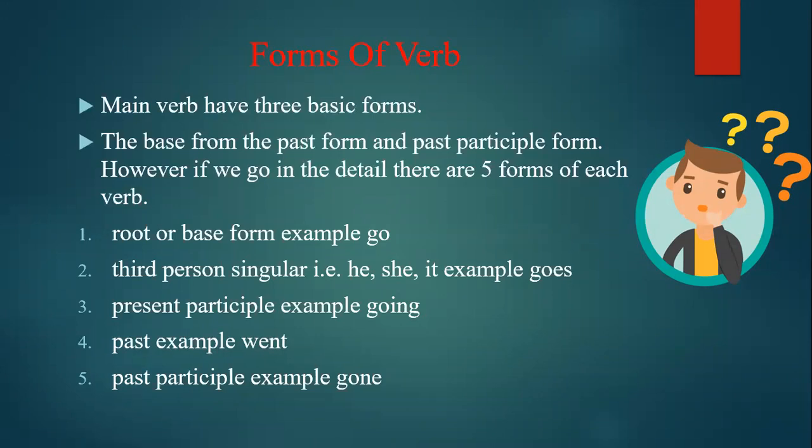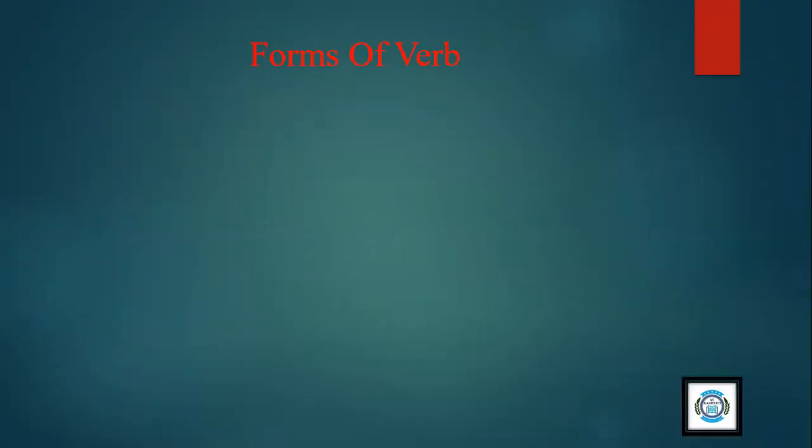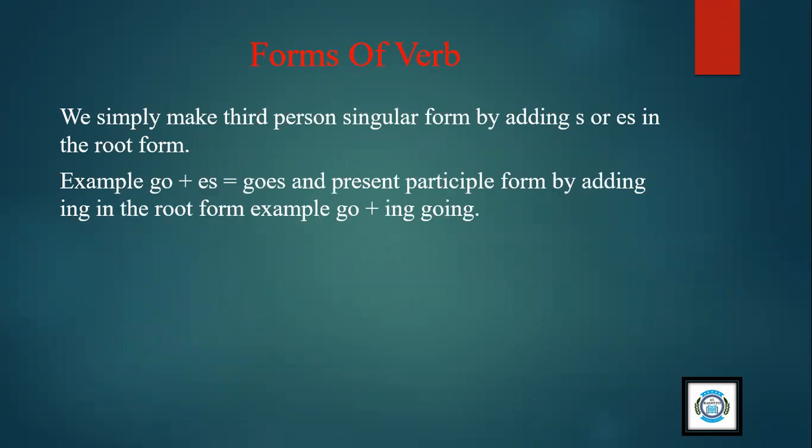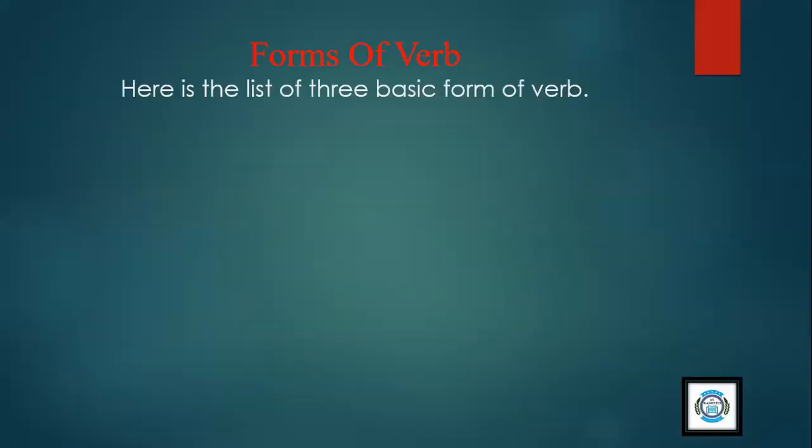So let's study the three main forms. We simply make third person singular form by adding s or es in the root form. For example, 'go' when we add es it makes 'goes'. And present participle form by adding ing in the root form, for example go plus ing will become 'going'. So here is the list of three basic forms of verbs.